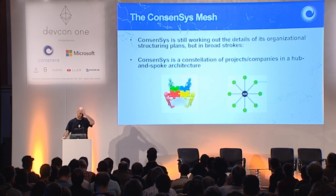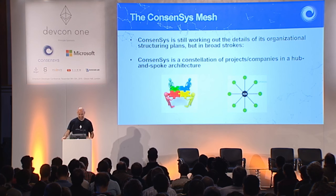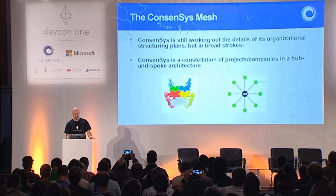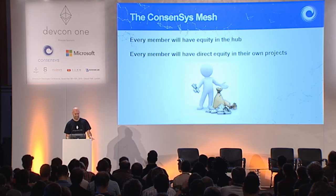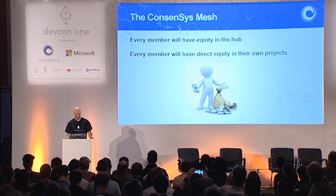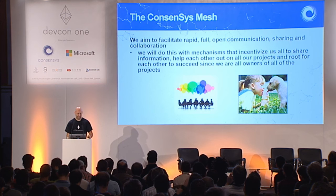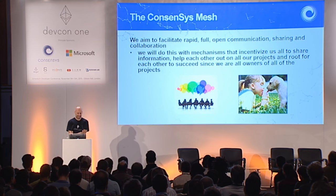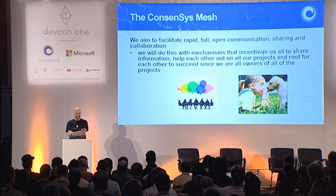ConsenSys is still working out the details of its organizational structuring plans, but in broad strokes, ConsenSys is a constellation of projects or companies — projects that will become companies — in a hub and spoke architecture. Every member will have equity in the hub. Every member will have direct equity in their own projects. We aim to facilitate rapid, full, open communications, sharing, and collaboration.